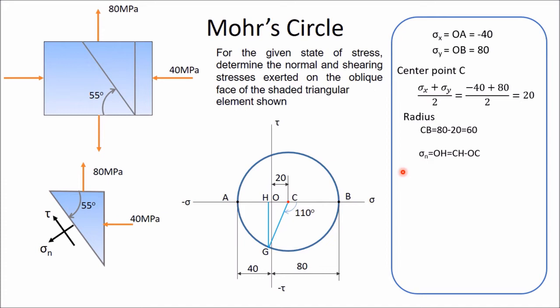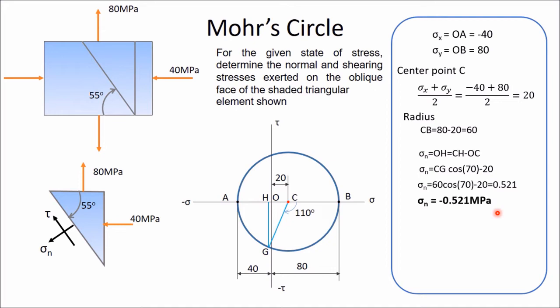Normal stress equals OH, which equals CH minus OC. OC is known as 20. CH can be determined as CG·cos 70°. If this angle is 110°, the remaining angle is 70°. So CH = CG·cos 70°, and sigma n = CG·cos 70° − 20. CG is the radius of the circle, which is 60. So: 60·cos 70° − 20 = 0.521. This value is in the negative sigma direction, so the normal stress is minus 0.521 MPa.